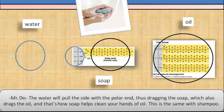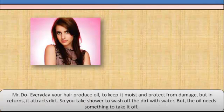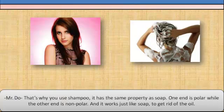This works the same with shampoo. Every day your hair produces oil to keep it moist and protect from damage, but that oil attracts dirt. You take a shower to wash off the dirt with water, but the oil needs something extra to remove it. That's why you use shampoo — it has the same property as soap, with one end polar and the other end nonpolar, working just like soap to get rid of the oil.